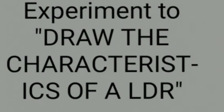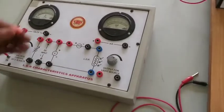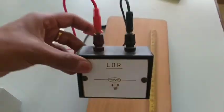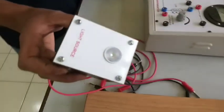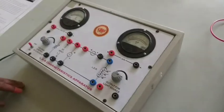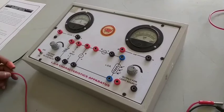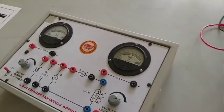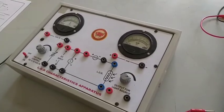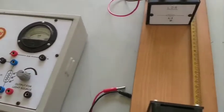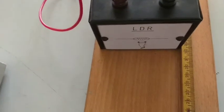The experiment we are going to discuss is to draw the characteristics of an LDR. LDR stands for Light Dependent Resistor. You can see the components: this is the LDR and this is the light source and this is the panel. In this experiment, what we study is the variation of current in an LDR with voltage, which gives you the characteristics of the LDR. Light-dependent resistance means when light falls on the resistor, the resistance of the device changes.